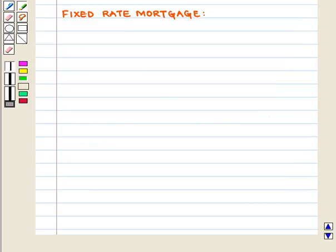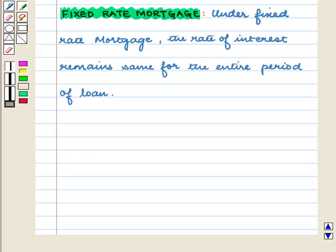Although there are different types of mortgages, here we will understand the meaning of fixed rate mortgage. Under fixed rate mortgage, the rate of interest remains the same for the entire period of the loan.